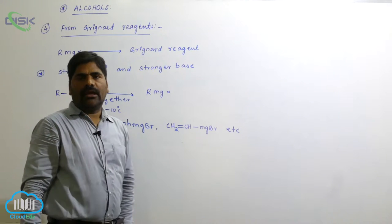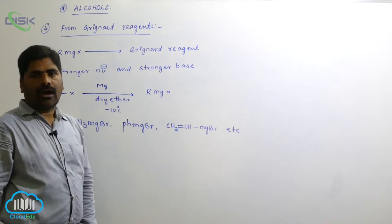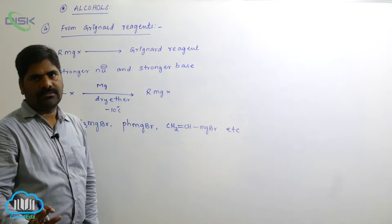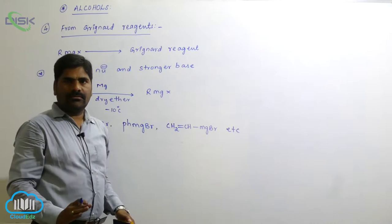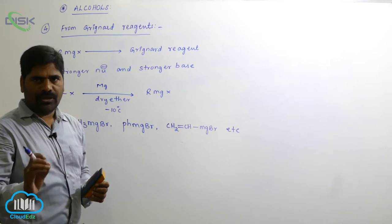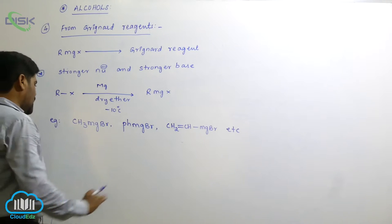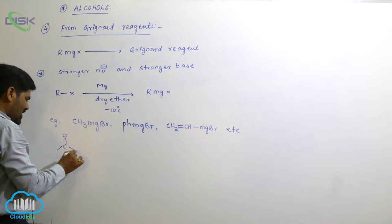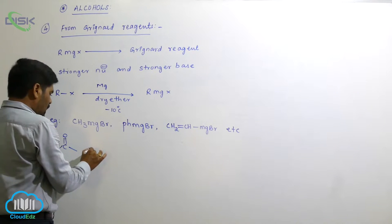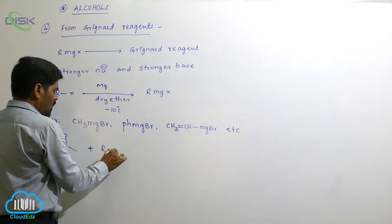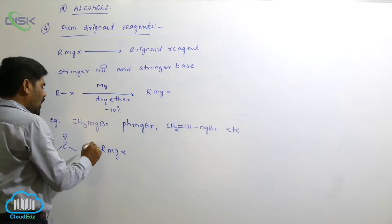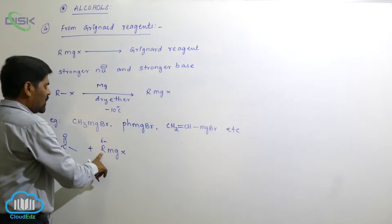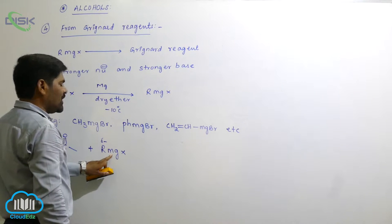When a Grignard reagent reacts with a carbonyl compound, it forms primary, secondary, and tertiary alcohols. In the general carbonyl reaction, the carbonyl group reacts with alkyl magnesium halide.